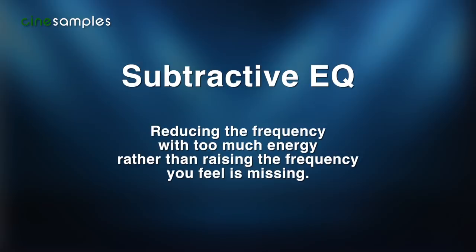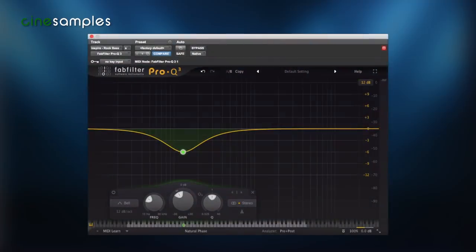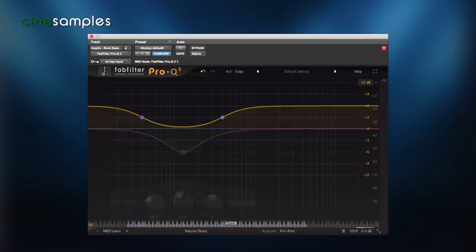Subtractive EQ is the best method most of the time. That means finding the frequency with too much energy and reducing it, rather than raising the frequencies you feel are missing. If you feel a track lacks clarity or high frequency, chances are there's too much energy in the low or mid frequencies. Always keep in mind: subtracting one frequency will boost others as a result after gain compensation. Therefore, you may create new problems while solving for one. For example, a 6 dB reduction at 130 Hz might sound similar to boosting a high and low shelf by 6 dB on either side of 130 Hz after gain compensation.